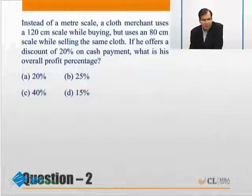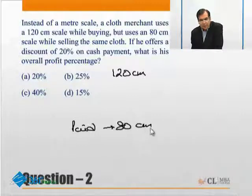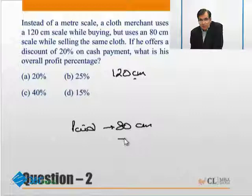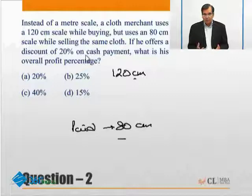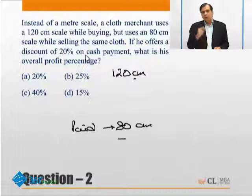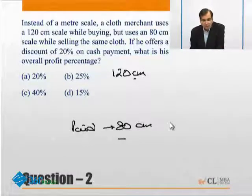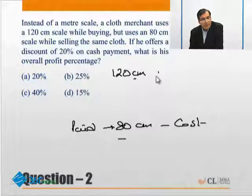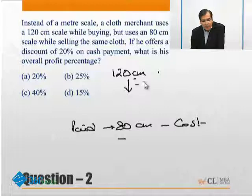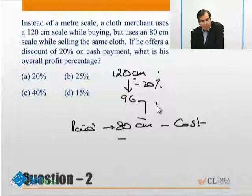We can also look at this another way. The shopkeeper effectively got 120 centimeters but paid only for 100 centimeters, and he gives customers only 80 centimeters. So out of the 120 centimeters he received, he gives away 80 centimeters, and the balance 40 is his profit. 40 centimeters on a base of 80 centimeters is a profit of 50 percent — the same as our two successive increments calculation. Now he gives a 20 percent cash discount, so he gives away 24 centimeters and is left with 96 centimeters. His profit is 16 centimeters on a base of 80 centimeters: 16 upon 80 = 20 percent.